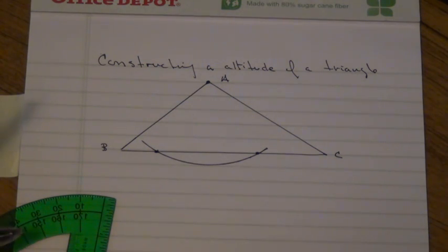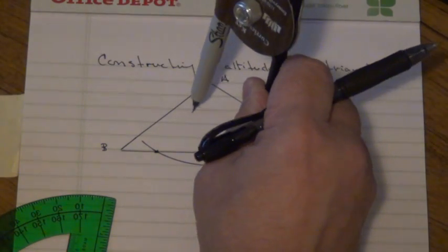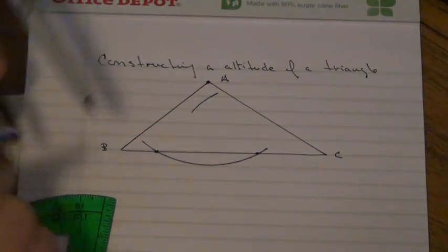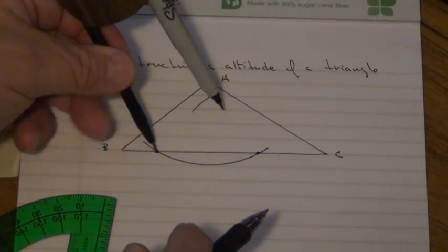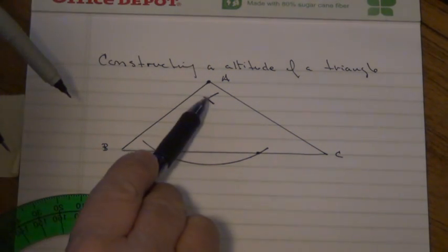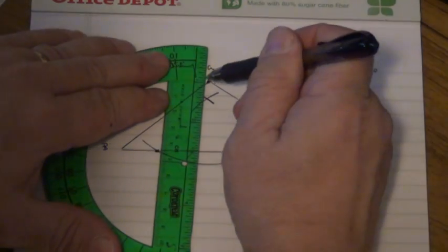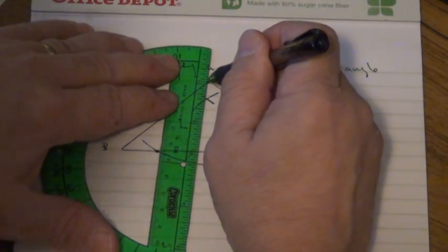So here, I'm just going to do it inside here and draw an arc. Draw another arc from this point. Okay, so there's another point that's equal distance between those two points, A and that point. And then when I draw my line here.